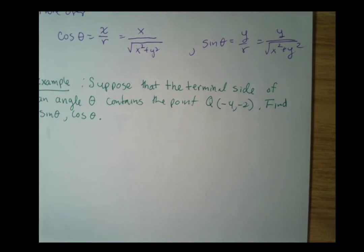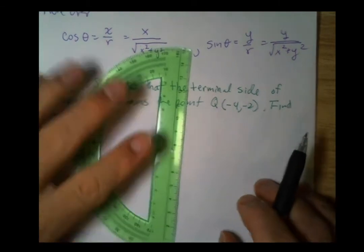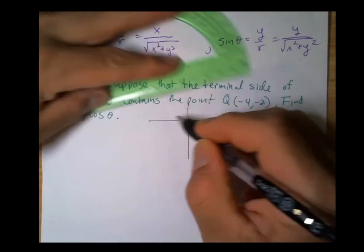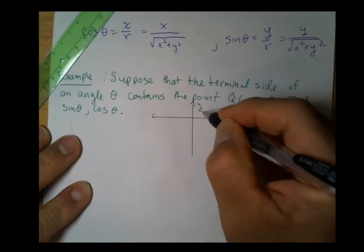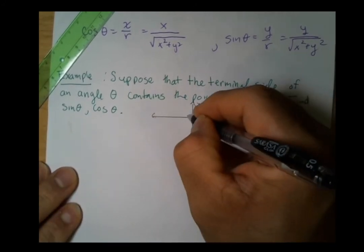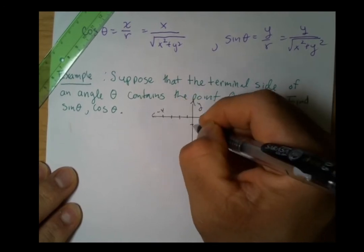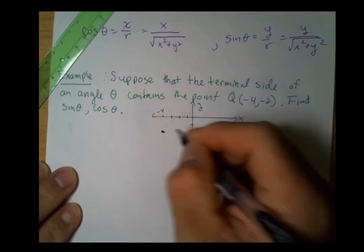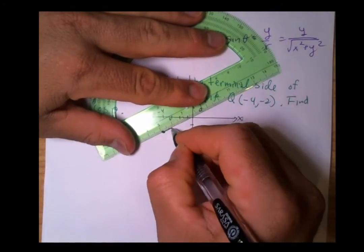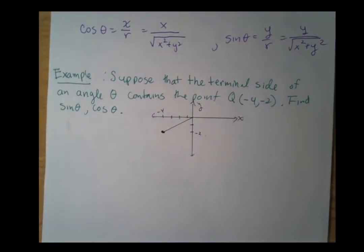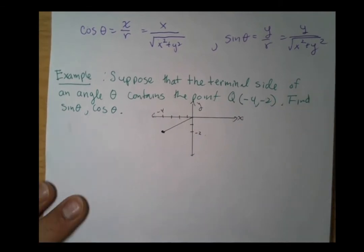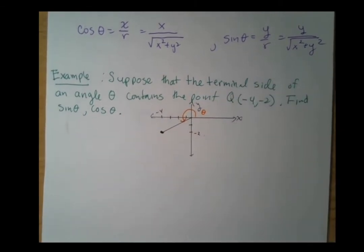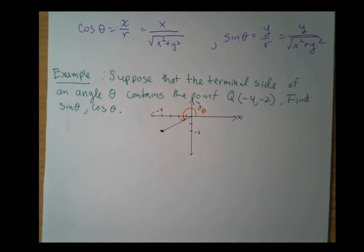I'm going to start by drawing the point—I like to have a visual to go along with these problems. We have our x-axis and y-axis. We have negative four (1, 2, 3, 4) and negative two, so that would be this point down here. The angle theta is in standard position unless otherwise told.